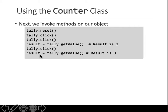How the class or the methods are doing their job — the object tally does not care about that. This is the essence of object-oriented programming: the interface says you can call reset, click, and get value. What's happening inside those functions, how those values are stored — the object, named tally here, does not know and does not need to know.